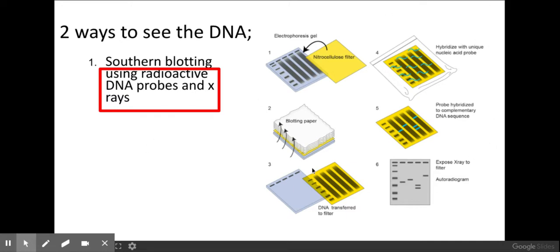Now you don't need to know this process off by heart, but you do need to know that we can use radioactive DNA probes and x-rays to visually see my DNA. To do this, you will put a filter over the top of your plate and blotting paper so that the DNA is then transferred to the filter.